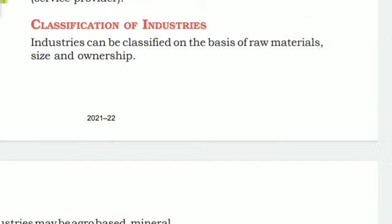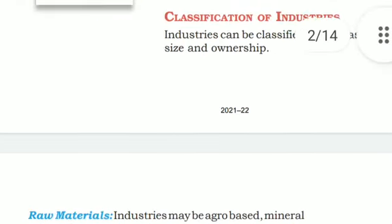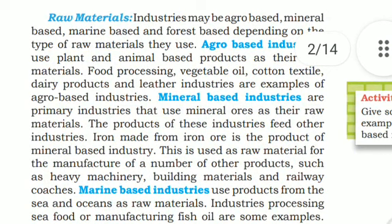Classification of industries: Industries can be classified on the basis of raw materials, size, and ownership. Based on raw materials, industries may be agro-based, mineral-based, marine-based, and forest-based, depending on the types of raw materials they use. Agro-based industries use plant and animal-based products as their raw materials.